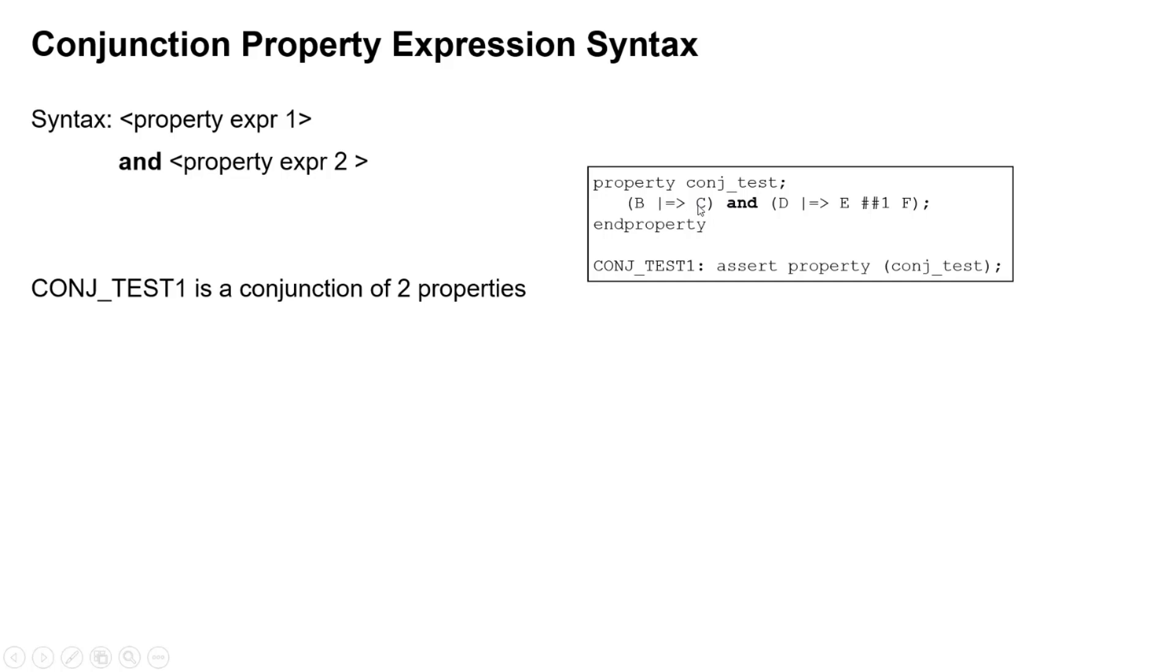So this is a property expression: B implies next cycle C. And here's a different length property so that each will pass in a different number of cycles. If it passes it will do it in two cycles. This one here: D implies next cycle E followed by F. That will take three cycles to pass, of course, and what we've done is assert that property.